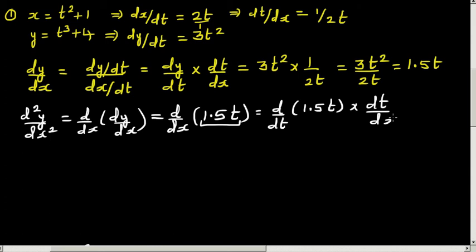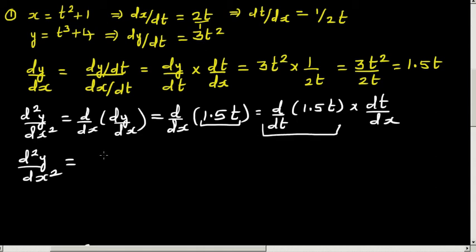So that is the same as writing d/dt of 1.5t times dt/dx — the dt terms cancel, confirming this equals d/dx of 1.5t. So d²y/dx² equals d/dt of 1.5t, which is 1.5, times dt/dx. We know dt/dx is 1 over 2t, so that is 1.5 over 2t.